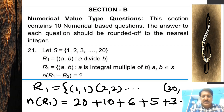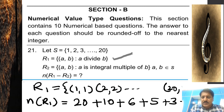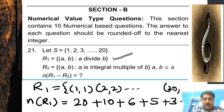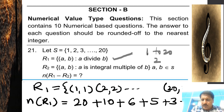This question is from JEE Main Session 1, morning session, given under numerical value type questions. It is a simple question based on simple set forms and number systems. The set S is given as S = {1, 2, 3, ..., 20} — so 20 positive integers are given.